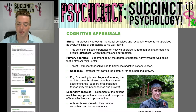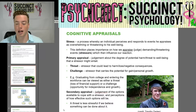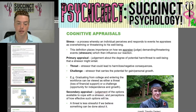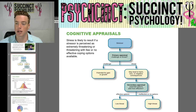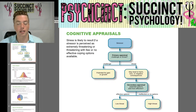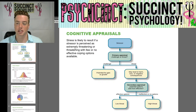Secondary appraisal is a judgment of the options available to cope with a stressor and perceptions of how effective such options will be. A threat is less stressful if we believe something can be done about it. Stress is likely to result if a stressor is perceived as extremely threatening with few or no effective coping options available.